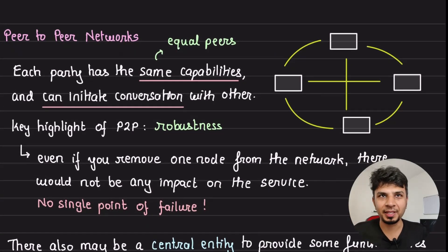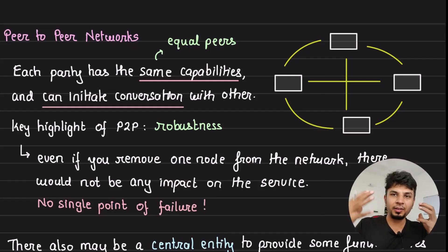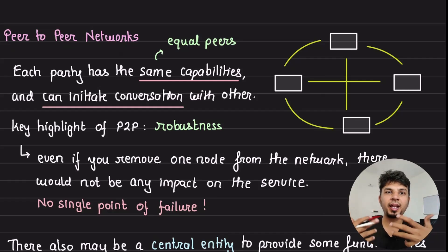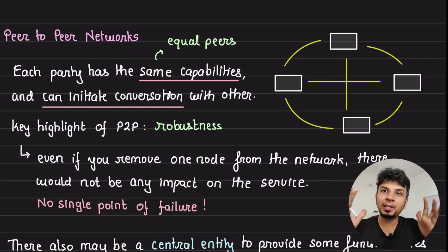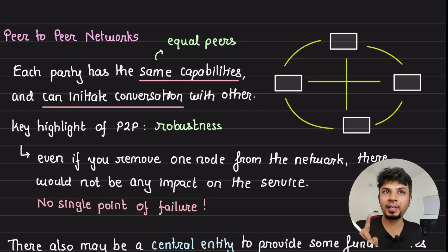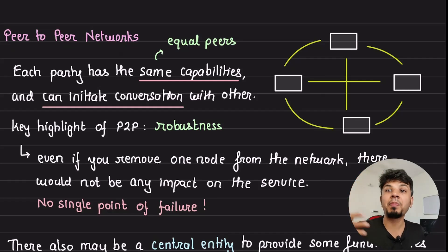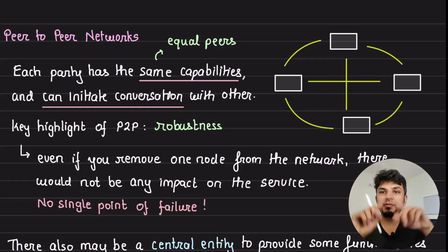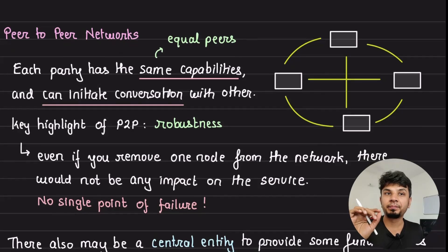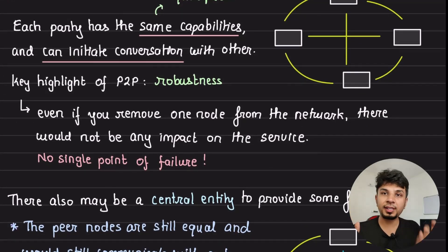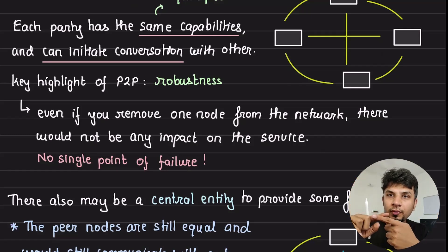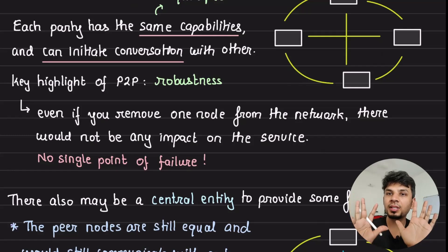That is where peer-to-peer networks come in. In a P2P network, almost every device can connect to every other device, which tries to make downloads faster by leveraging P2P capabilities. In a peer-to-peer network, every single machine participating in this network has the exact same capabilities — they are all equal peers and they can initiate conversations with each other. The biggest highlight of a P2P network is its robustness, meaning that even if a few nodes crash or are removed from the network, your network is still serving the use case it needs to.